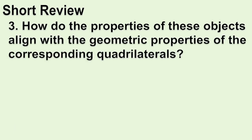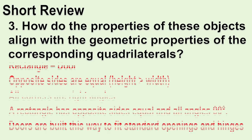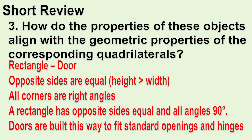How do the properties of these objects align with the geometric properties of the corresponding quadrilaterals? Square — Floor tile: All sides are equal in length and all corners are right angles. A square is a quadrilateral with four equal sides and four right angles. Floor tiles are designed this way for symmetry and alignment in tiling patterns. Rectangle — Door: Opposite sides are equal, height is greater than the width, and all corners are right angles. A rectangle has opposite sides equal and all angles 90 degrees. Doors are built this way to fit standard openings and hinges.